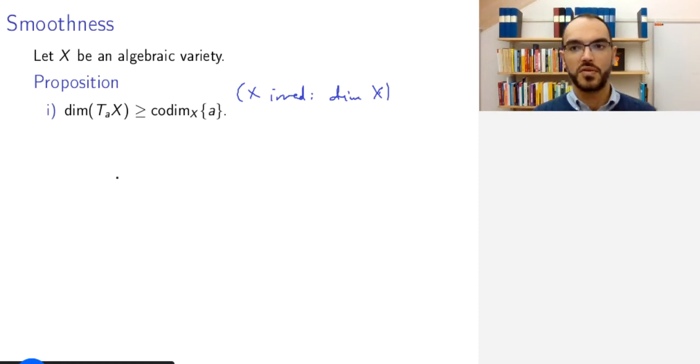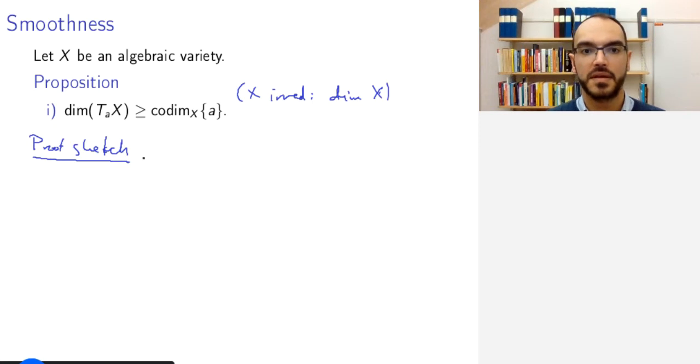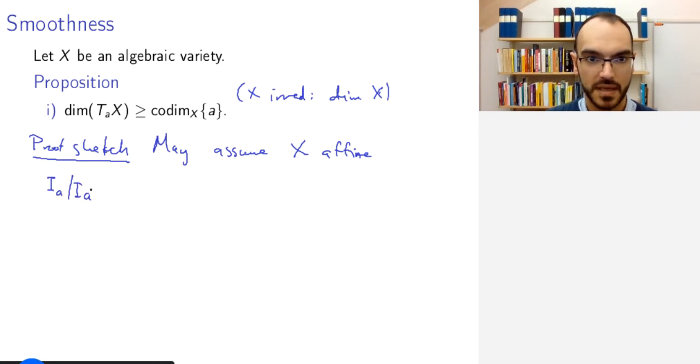And so a proof sketch of this is as follows. After choosing some open subset we may assume that X is affine. So we're in the affine setting.